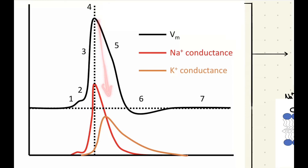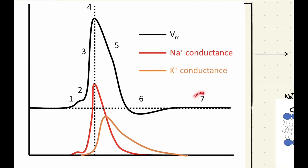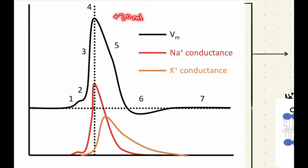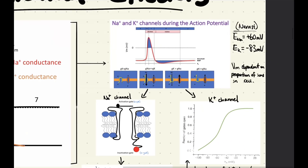At point 0.5, you can see your hyperpolarization as you go down. At point 0.6, you're going to see your refractory period. At point 0.7, you return back to your resting membrane potential, which is about negative 60 to negative 70 millivolts. Just for reference, the peak is going to be about plus 20 millivolts, and at point 0.2 — the threshold — that's going to be about negative 50 millivolts.